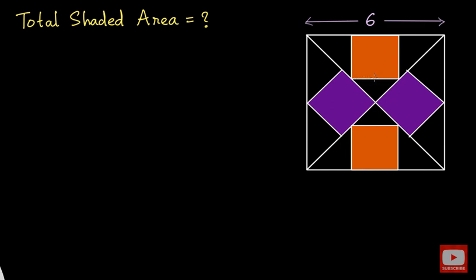To find the area of these brown squares and purple squares, we need to know their side lengths. So our first aim should be to find the side lengths of these squares. Let us start with the brown square. Let me take the side length of the brown square as x, so this side will be x and this side will be x.